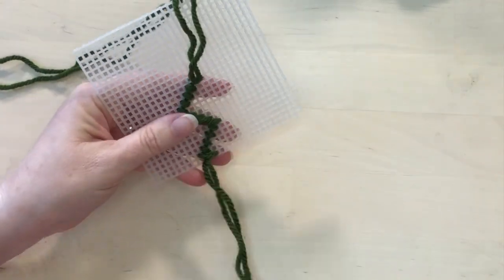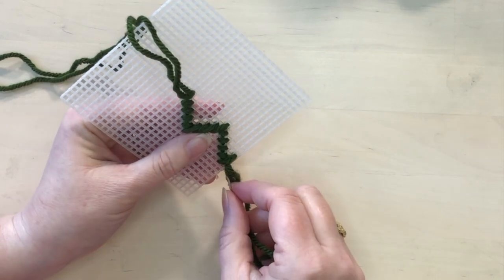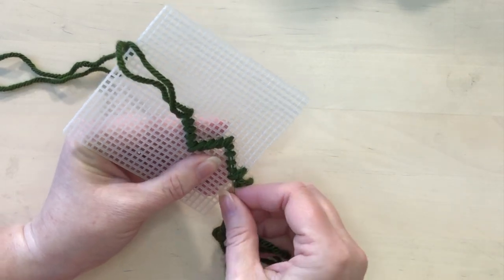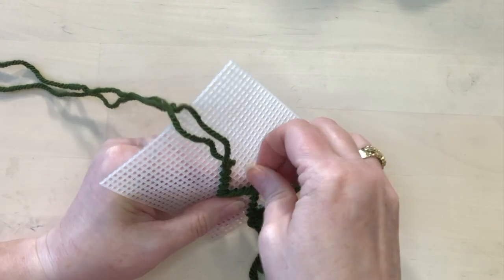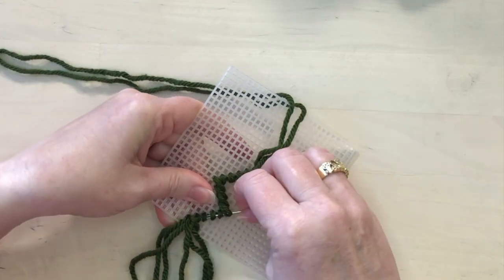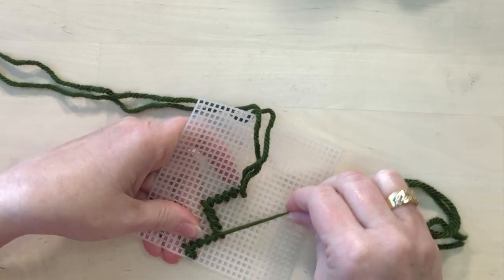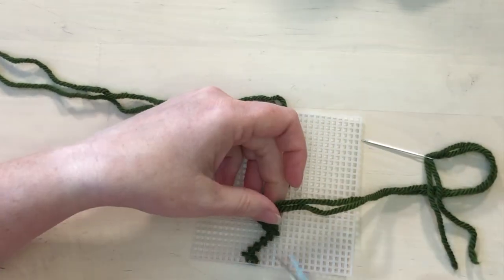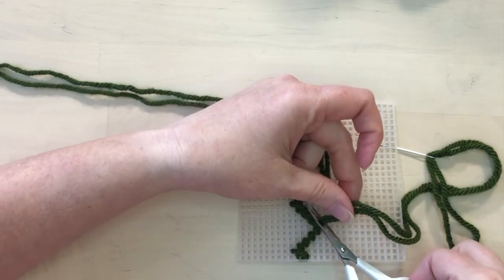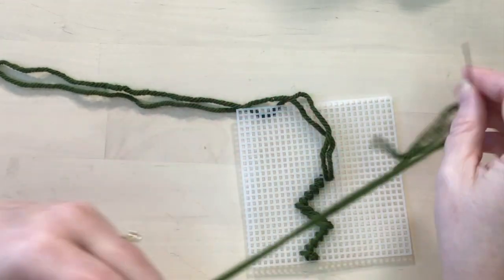And then once I've gotten to the end, I will just weave the end of my thread underneath the stitches. And then I can trim off the ends.